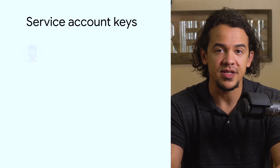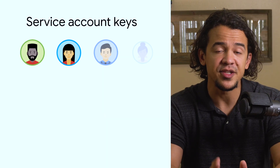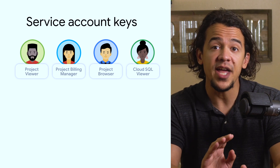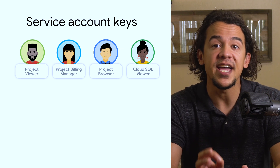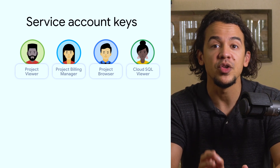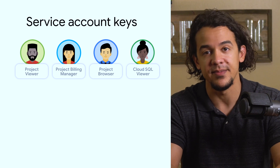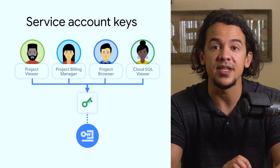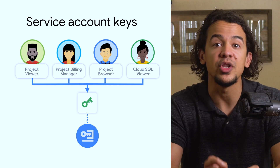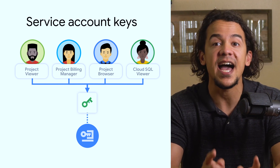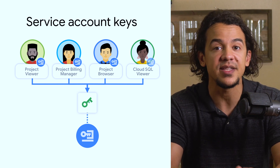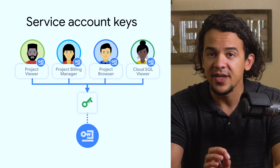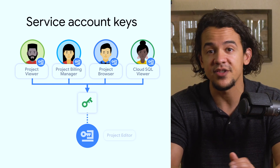Before we dive into service account keys, let's talk about the security implications of using them. For users that already have access to your project, there aren't any special roles that they need to use service account keys to act as them. That means that any user in your project's IAM policy that has access to that key will be able to utilize the corresponding service account to access APIs and services.